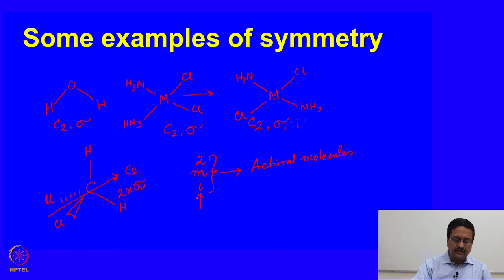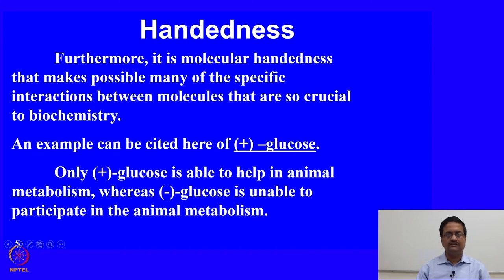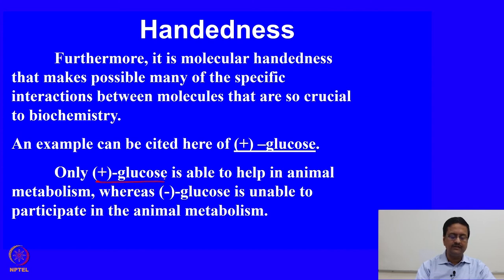The molecule containing an inversion center I is called a centrosymmetric molecule. It is the molecular handedness that makes possible many of the specific interactions between molecules that are crucial in biochemistry. Some handed molecules are biologically active and some with the opposite handedness are biologically inactive or not as active as the other. For example, plus-glucose can be cited here — only plus-glucose is able to help in animal metabolism, whereas minus-glucose is unable to participate in animal metabolism.